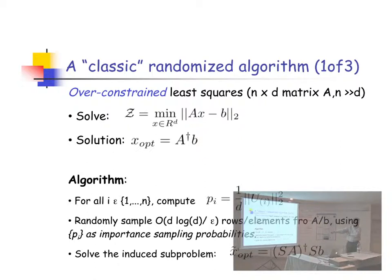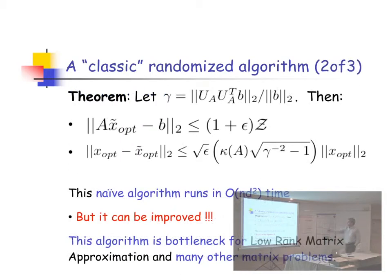Randomly sample a small number of constraints using that as an importance sampling distribution, and solve the subproblem to get X hat opt. If you solve that subproblem, you're golden. So don't worry about gamma. It's a five-factor.